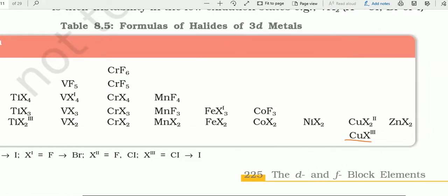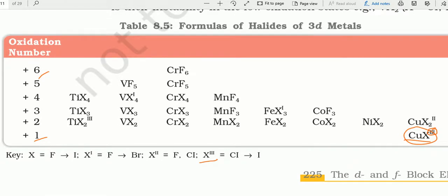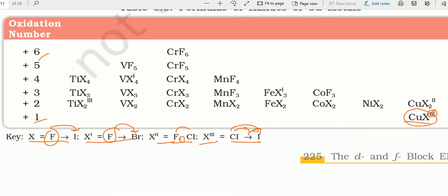Copper के अंदर plus 1 oxidation state — CuX में X (halide) का minus 1, Cu का plus 1। CuX₂ में X² का minus 2, Cu का plus 2। The highest oxidation number achieved: in TiX₄ — Ti का plus 4; VF₅ — V का plus 5; CrF₆ — Cr का plus 6। X represents different halogens: fluorine, chlorine, bromine, iodine as availability decreases with higher oxidation state।